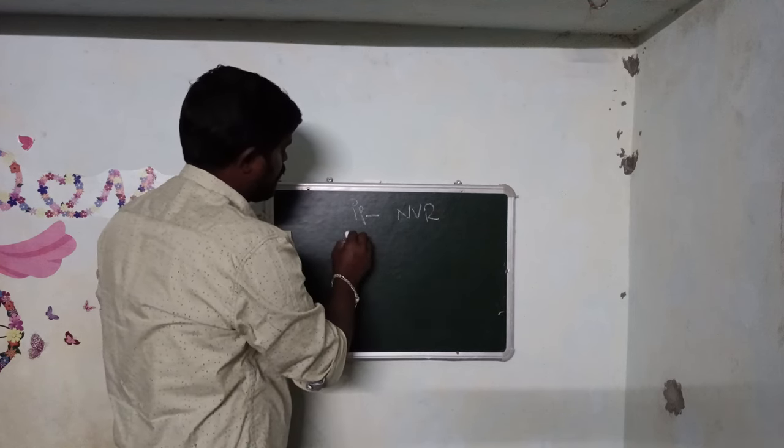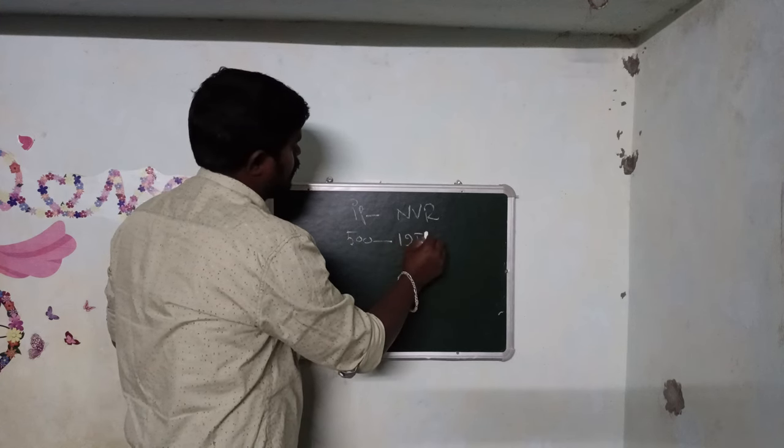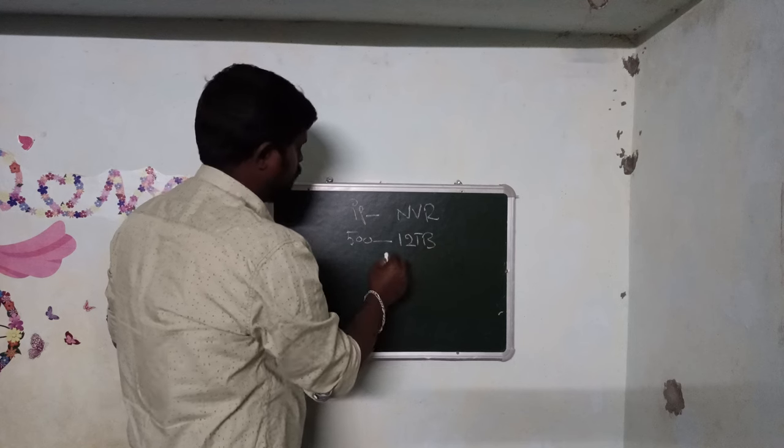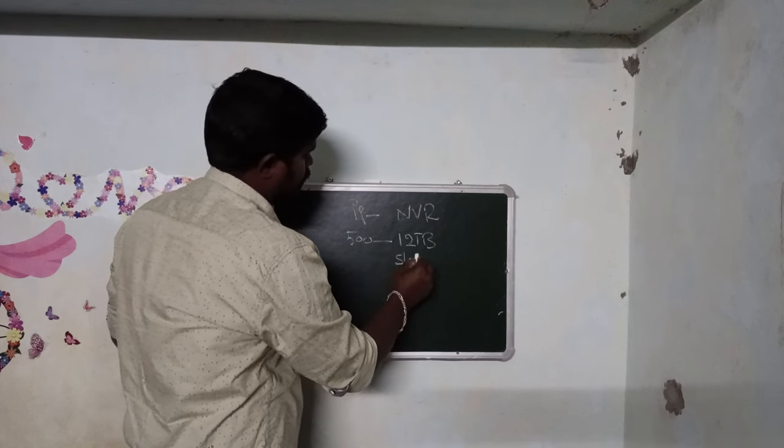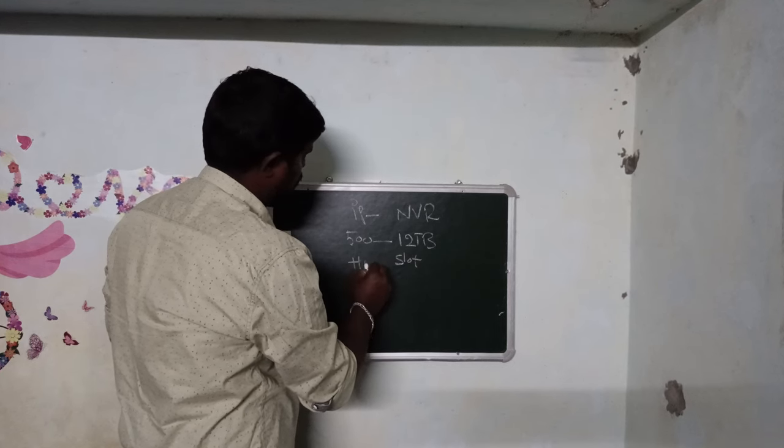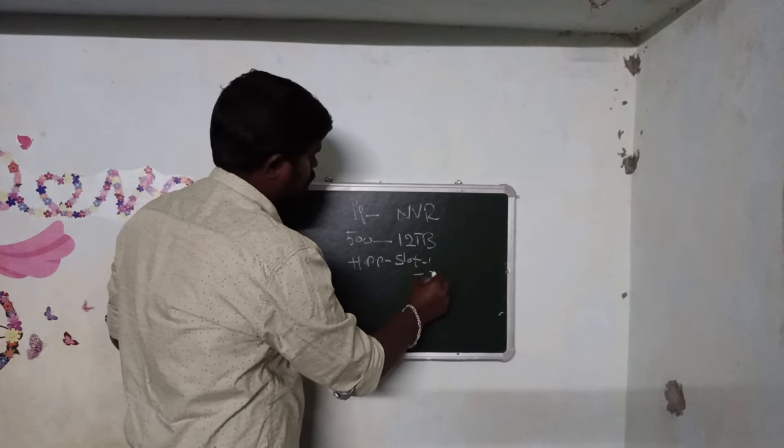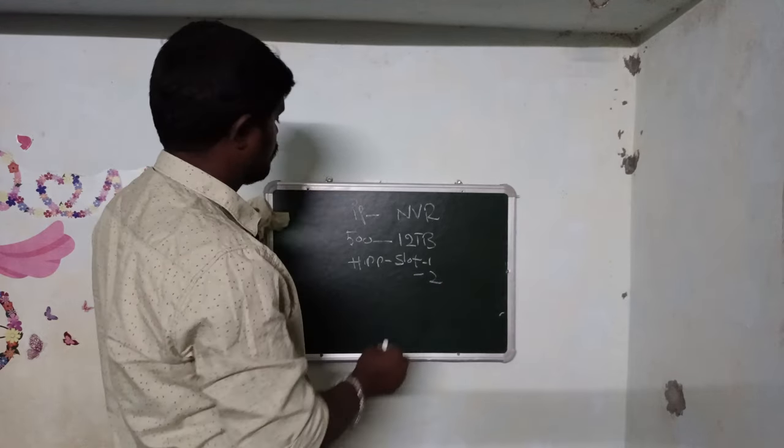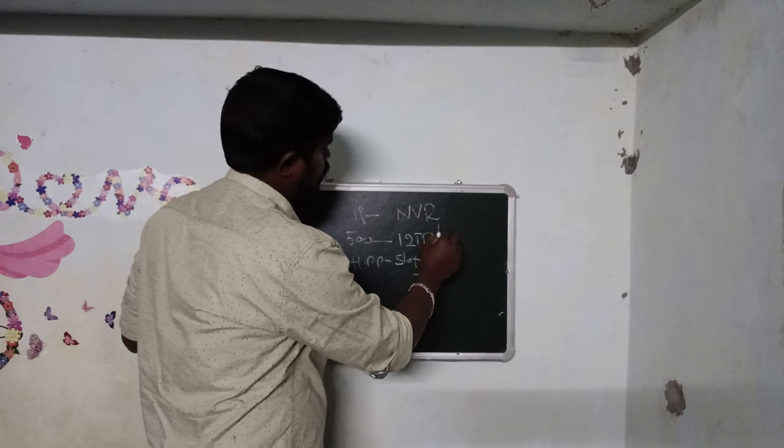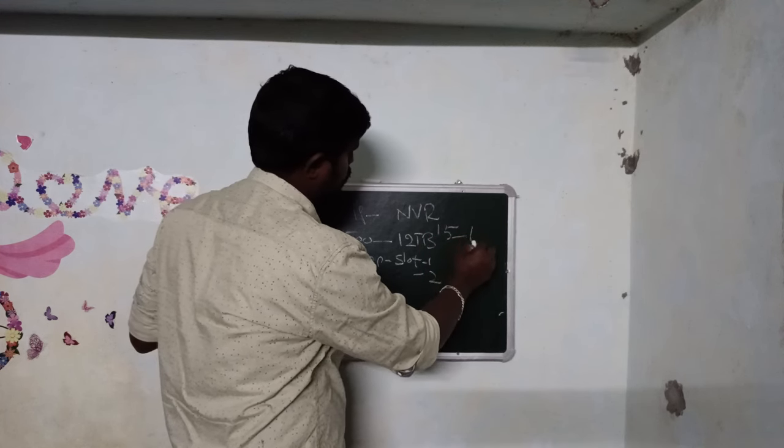Storage capacity ranges from minimum 500GB to 12TB. DVR and NVR systems have hardware with hard disk slots - available in one slot or two slot configurations. Recording duration can be 14-15 days to 6 months depending on capacity.